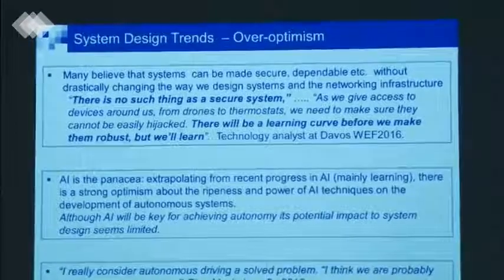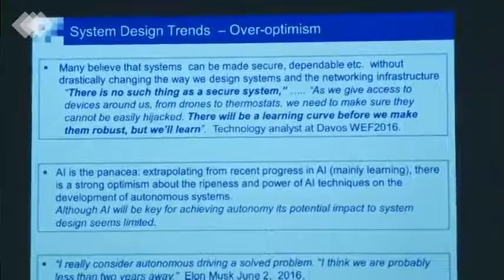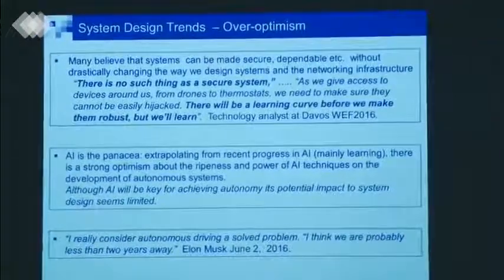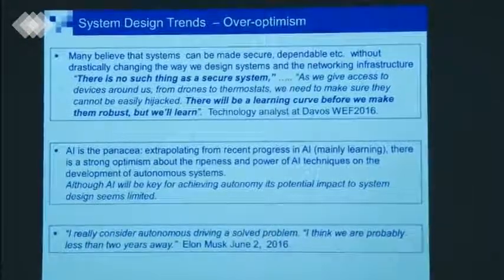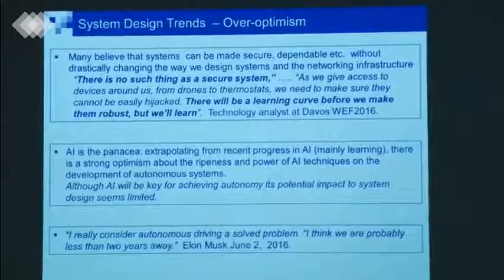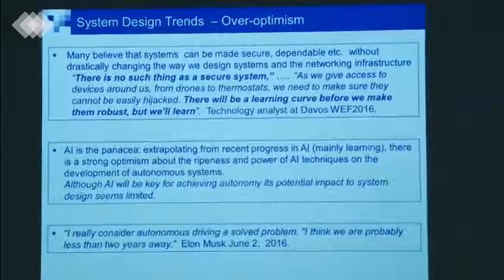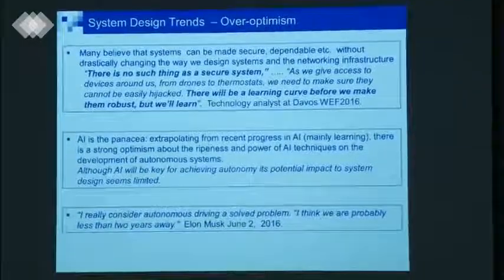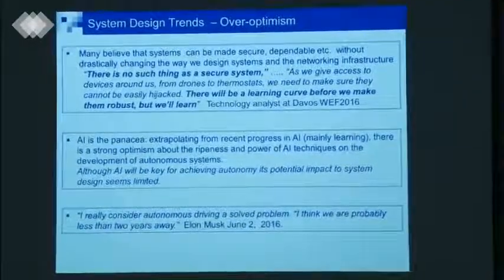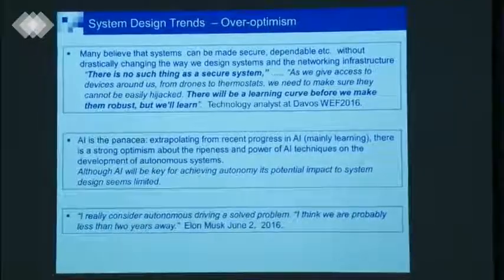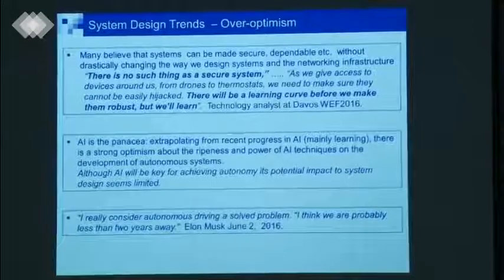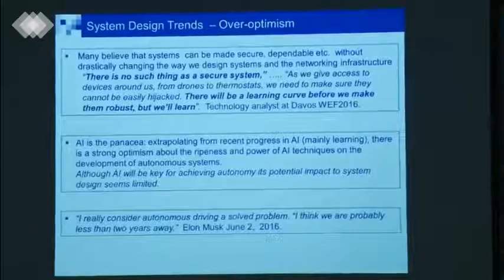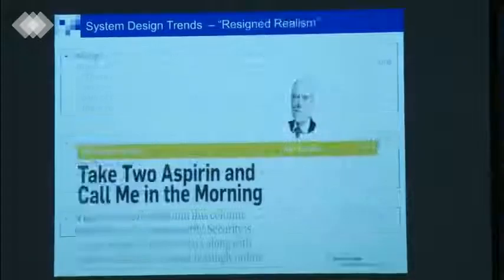Elon Musk — CEO of Tesla and other technology companies — says: I really consider autonomous driving a solved problem, and I think we are probably less than two years away. This is completely wrong. But he has good reasons to say this, because he's selling autonomous cars.